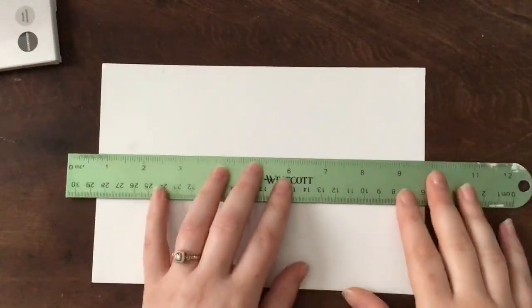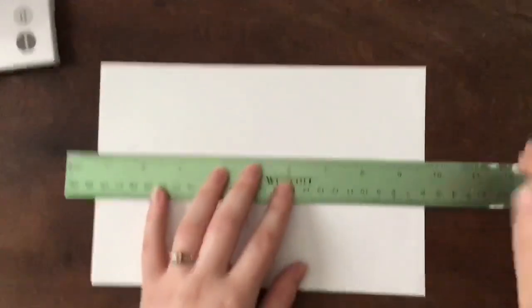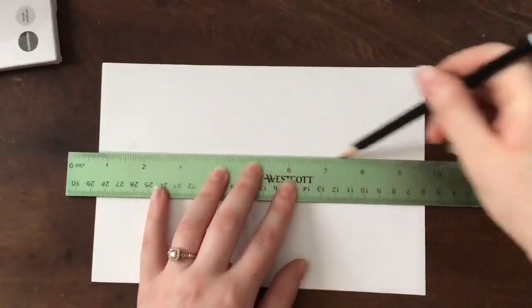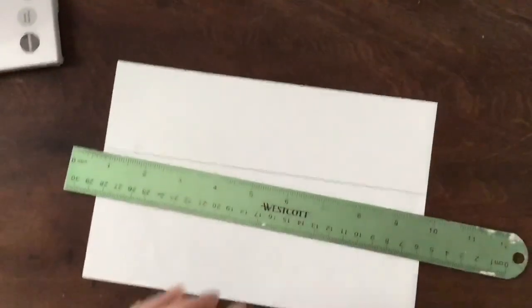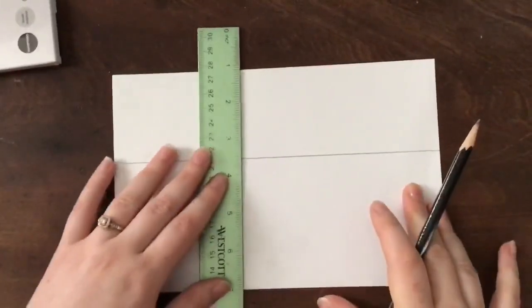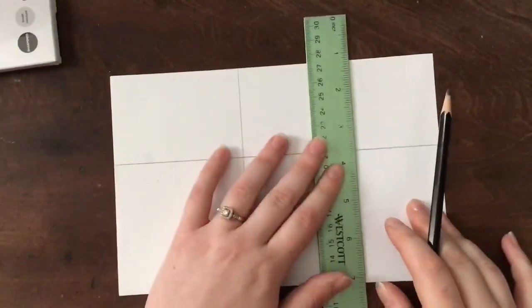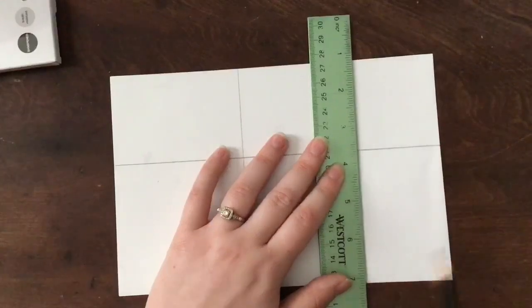The first thing I'm going to do is divide my paper into boxes or squares. They don't have to be exact, you don't have to measure. I'm going to divide this into six boxes. So I'm going to draw a line horizontally across my paper, and then I'm going to draw two lines vertically using a straight edge or a ruler. Alright, once I've got that finished,